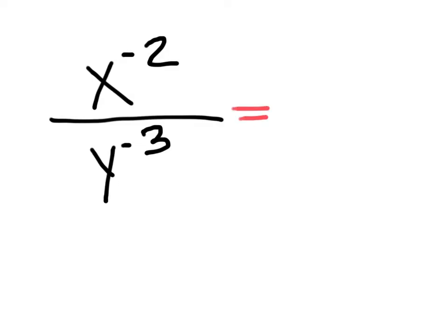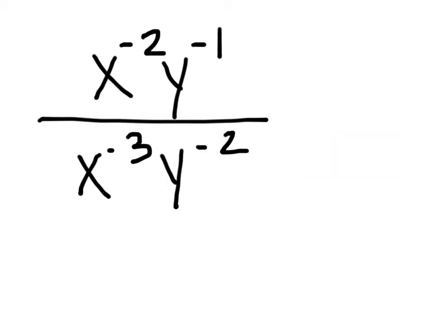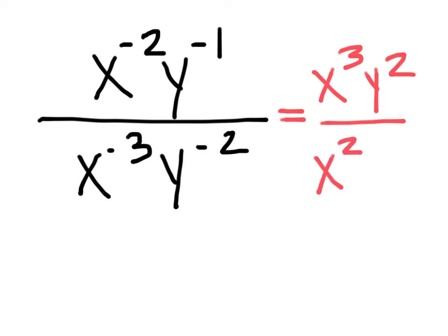Student practice: the first problem gives y to the third over x squared. For the next problem, a student starts with x to the third over y squared, then simplifies by placing the result over x squared over y — correctly working through the negative exponents step by step.